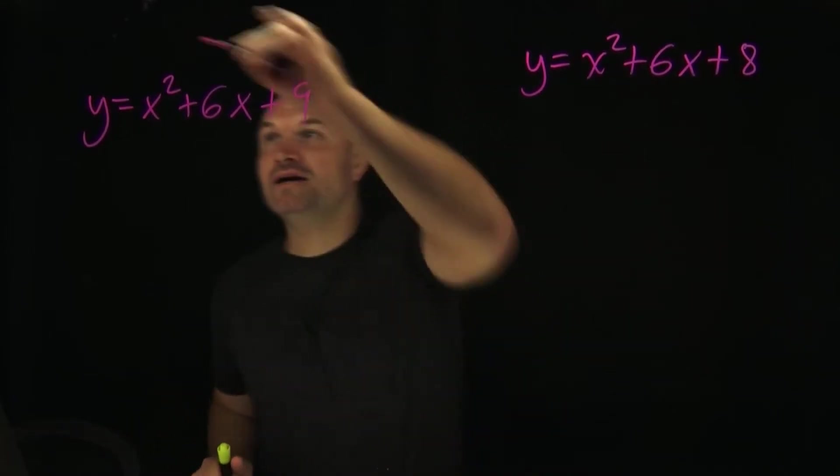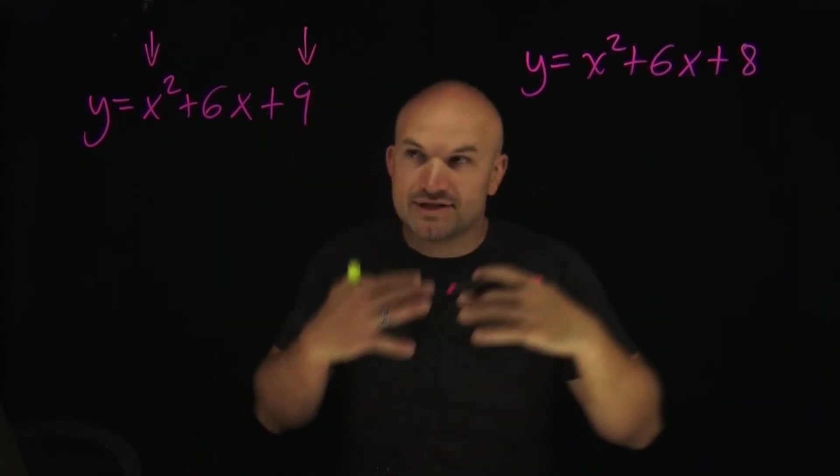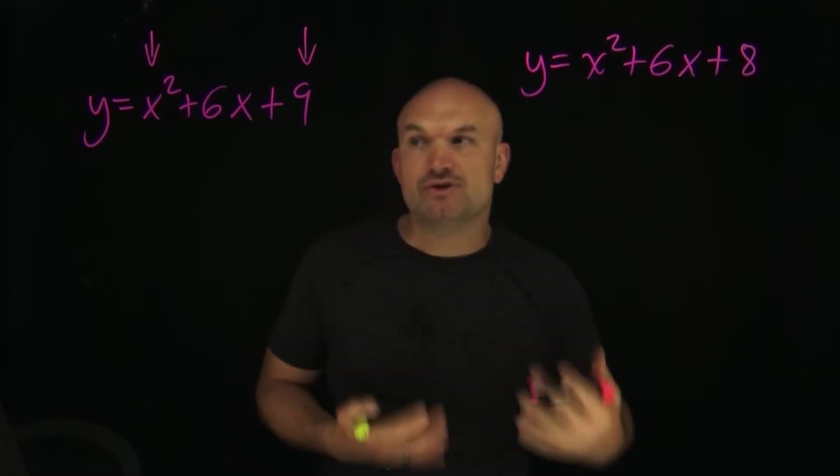Well the reason what's special about this is this is what we call a perfect square trinomial. Now remember, perfect square trinomials are trinomials where your first term is squared and your last term is squared. And what's so important about a perfect square trinomial is that they can be factored down into a binomial squared.